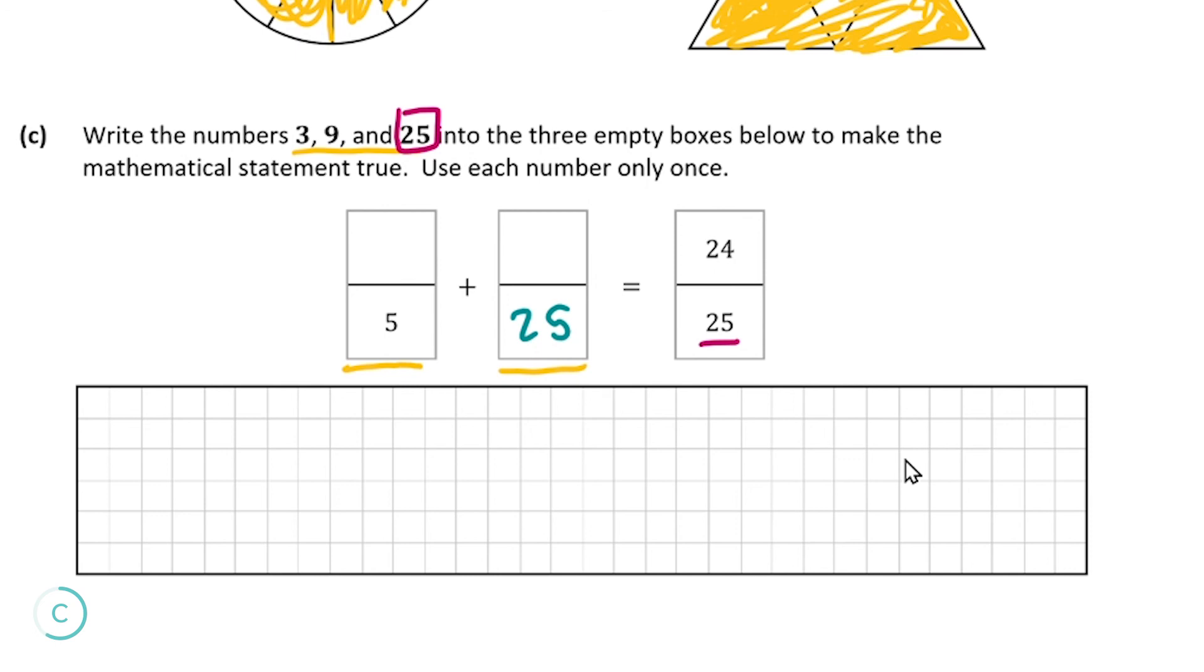So what you could do is just fill three and nine in into each of them and use guesswork to try and figure out which one's correct. However, doing it a bit more analytically, we can see on this right hand side we have 24 divided by 25. And since 24 is smaller than 25, we know that that's going to be less than one, so that means everything on the left hand side must be less than one.